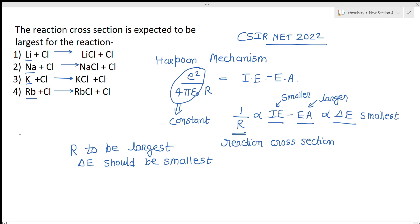As you go down a group in the periodic table, ionization energy decreases because the atomic size increases and the valence electrons are farther from the nucleus, so less energy is needed to remove them. Therefore, lithium has the highest ionization energy and rubidium has the smallest. Since electron affinity is the same for all options but ionization energy is lowest for rubidium, ΔE is smallest for rubidium, giving the largest reaction cross section. Option 4 (Rb + Cl) is the correct answer.